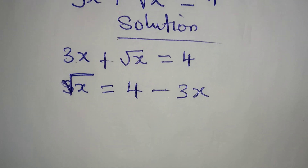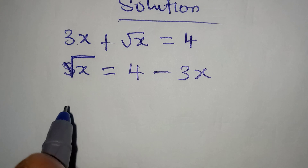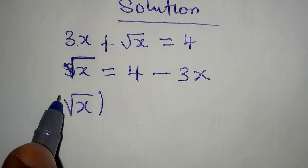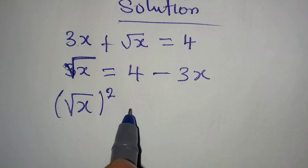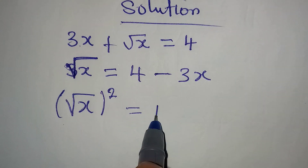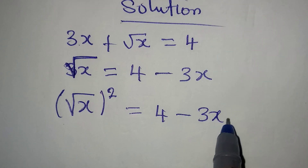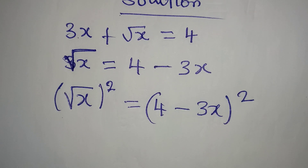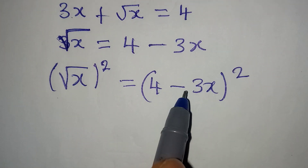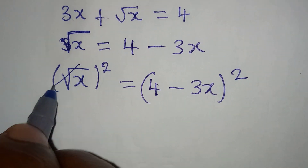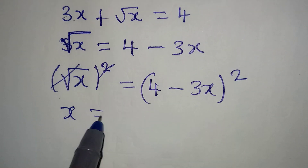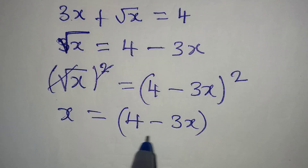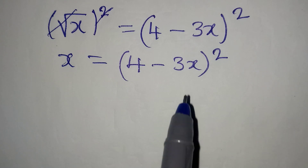Square root of x is now the subject. To remove the square root, we square both sides. So if I square this, I will equally square 4 minus 3x to the power of 2. Then x will be equal to (4 minus 3x) squared.